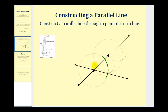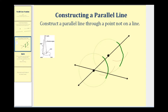Now we'll take the point of the protractor and put it on this point without adjusting the protractor, and swing another arc that intersects this line here and extends down toward the given line, something like this. Let's go ahead and mark where the arcs intersect the line that we drew — we'll put a point here and we'll put a point here.